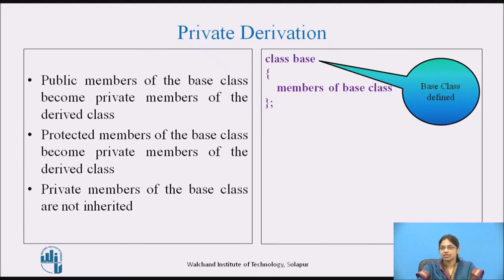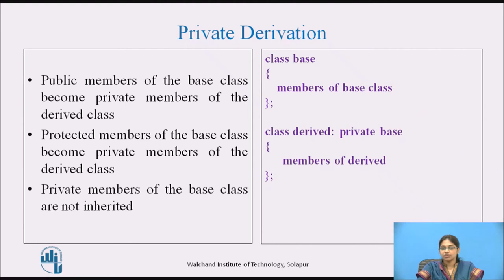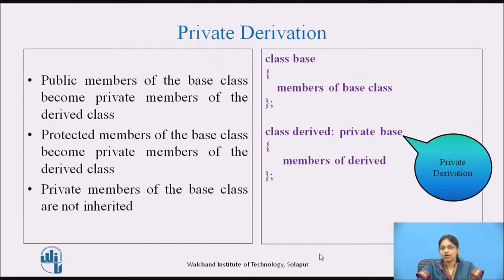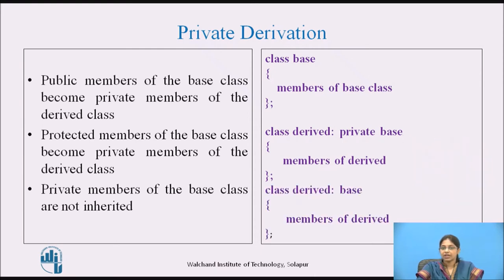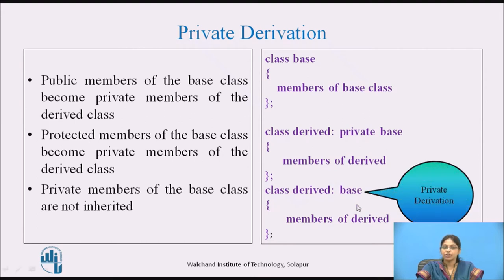This shows the declaration of the base class and how the derived class is defined with private mode of derivation — the keyword 'private' is specified after the colon. If no mode of derivation is mentioned, by default it is taken as private derivation.